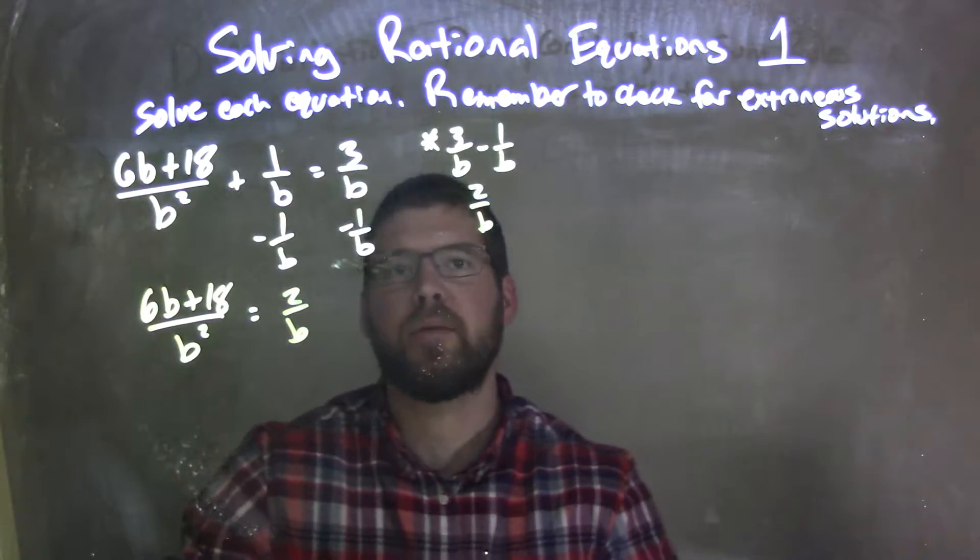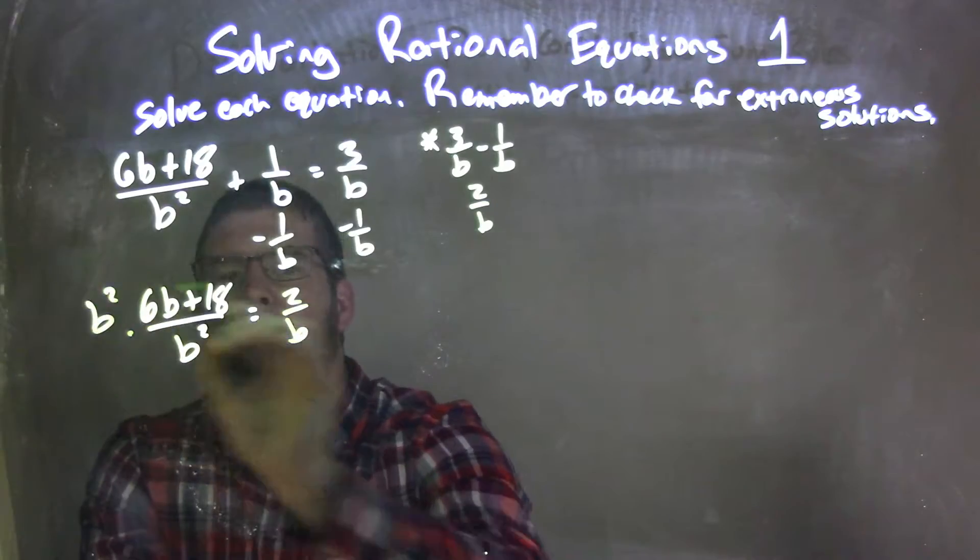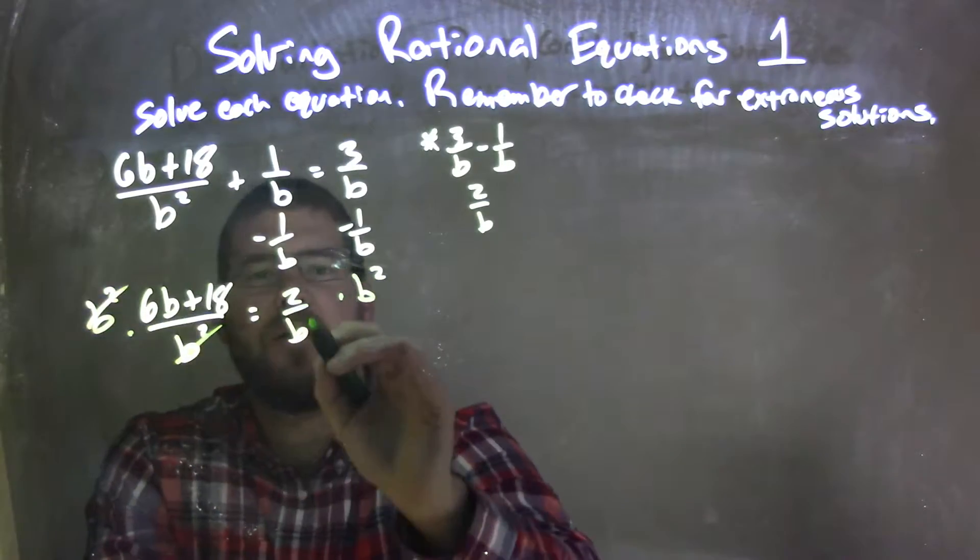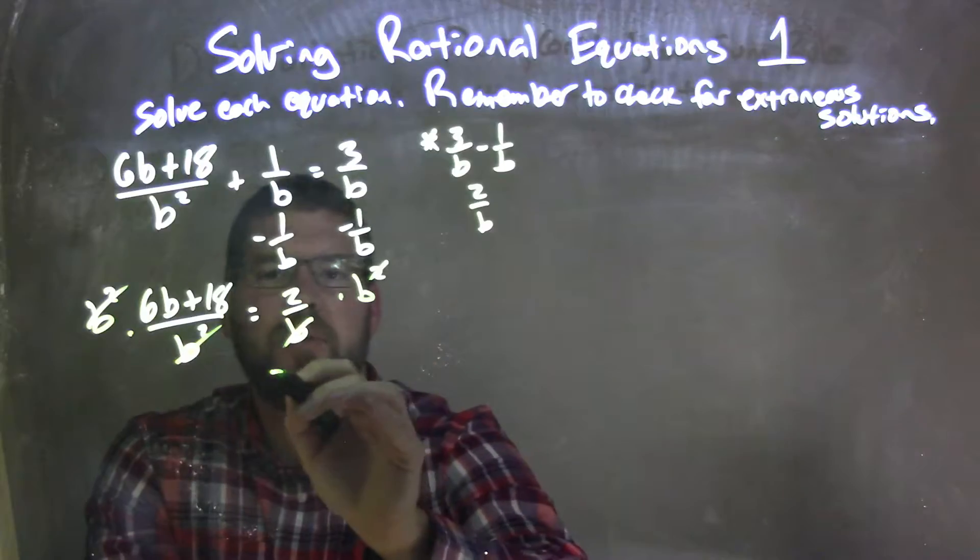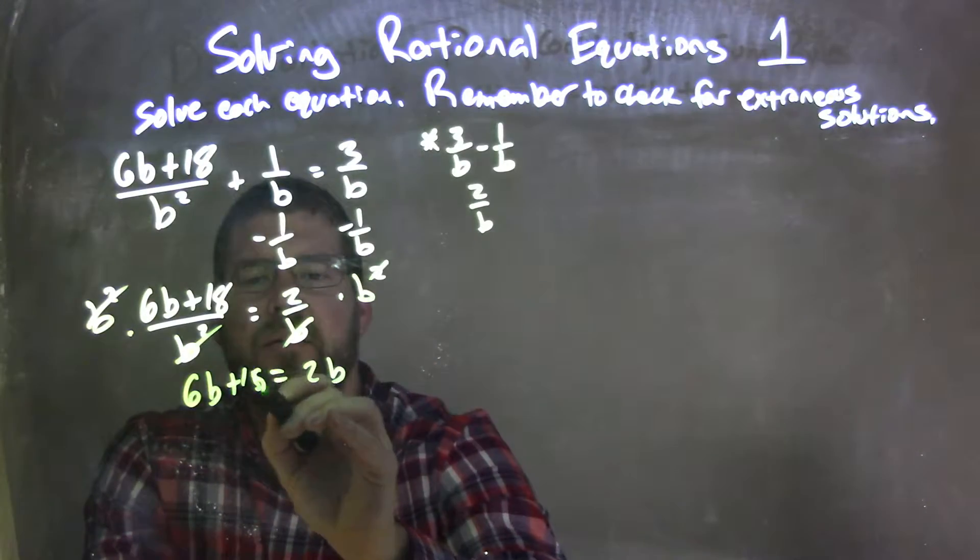A little note there, what's going on. And when I subtracted them, so we have 2 over b. So now, when I multiply b squared to both sides, b squared is going to eliminate it here. This b aligns with that squared, leaving me with just 2b on the right and 6b plus 18 on the left.